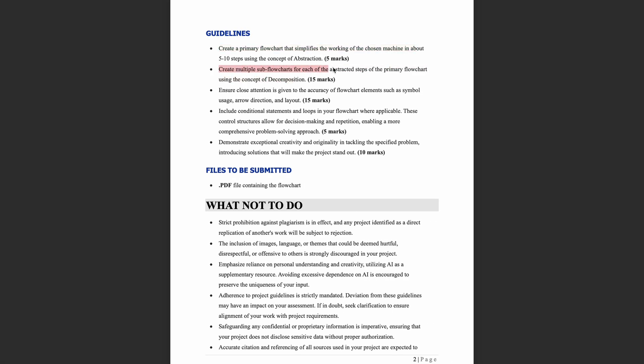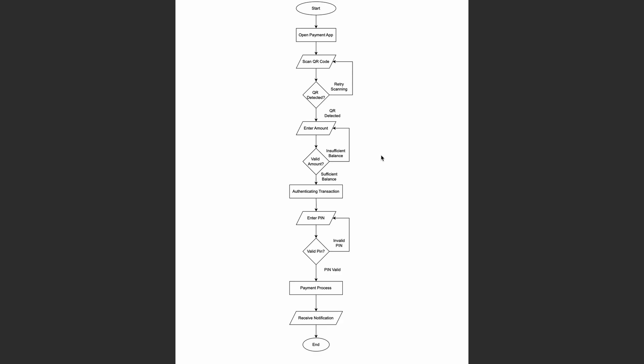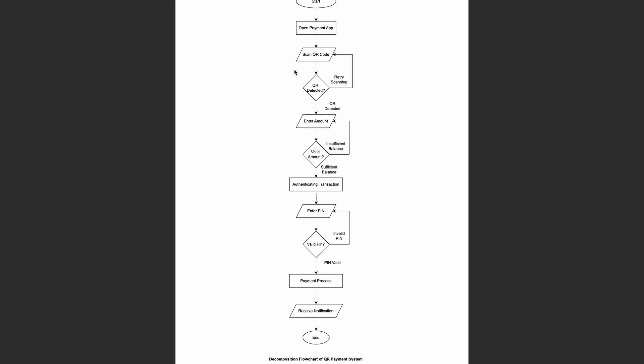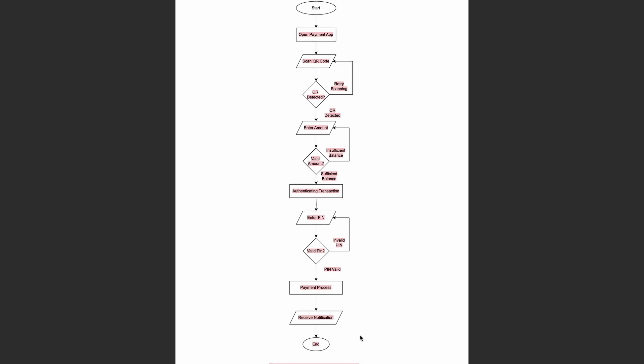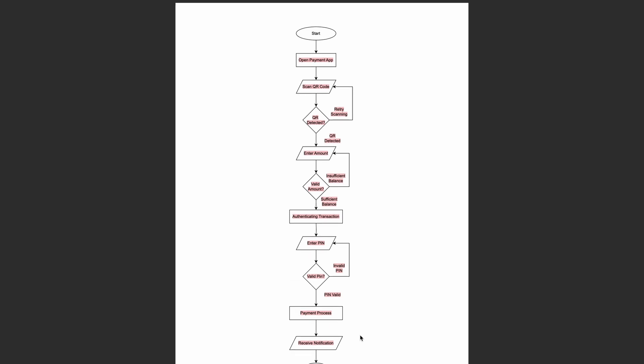Guideline two: Create multiple sub-flowcharts for each of the abstracted steps from the primary flowchart using the concept of decomposition. You can use a maximum of 15 sub-flowcharts. For each abstracted step, follow the flowchart using the concept of decomposition. Choose your topic, create the beta flowchart and sub-flowcharts, demonstrating both the abstraction and decomposition concepts clearly.